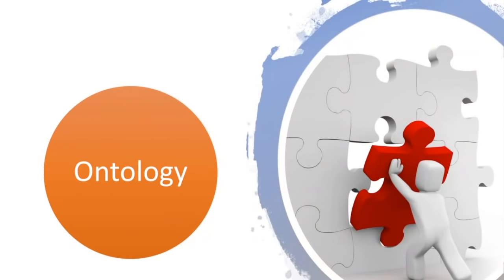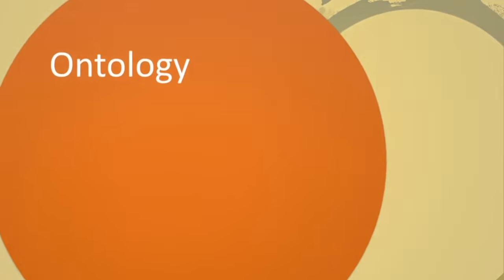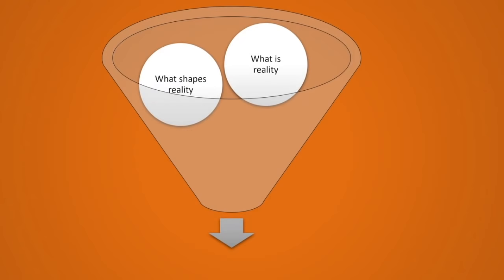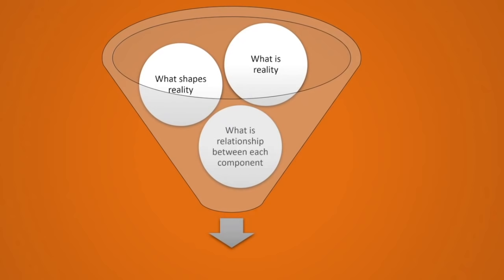Ontology is basically answering the questions: what is reality and what shapes reality? It tells you about knowledge and what is happening. For example, if you are planning to solve any problem, it gives you an idea of what that problem is and what are the possible solutions. Ontology gives three basic answers: what is reality or knowledge, what shapes that knowledge or reality, and what is the relationship between the components that shape reality.